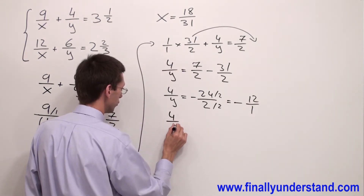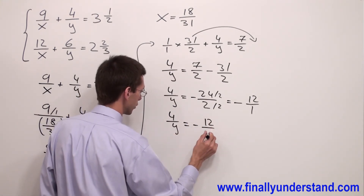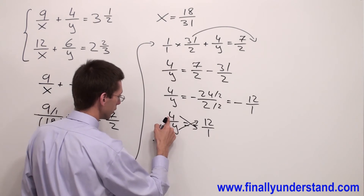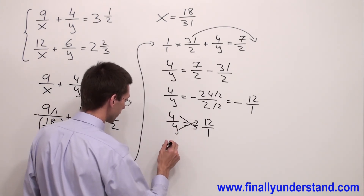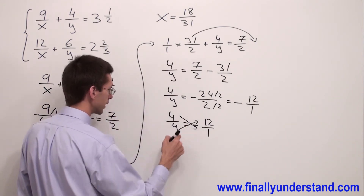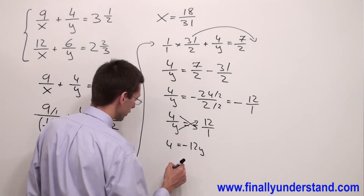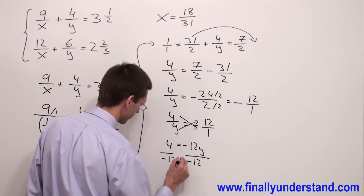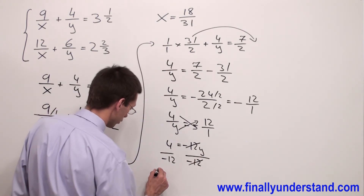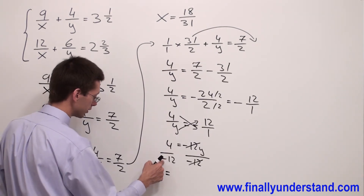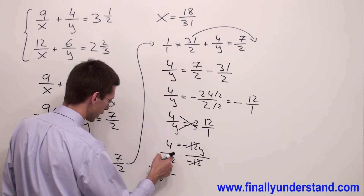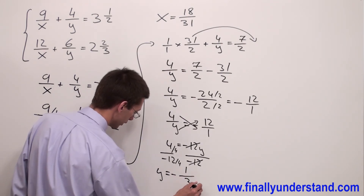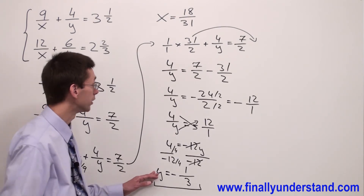So 4 over y equals negative 12 over 1. We solve the proportion: 4 times 1 equals 4, equals y times negative 12, so negative 12y. Dividing both sides by negative 12 — negative 12 cancels — we have y equals positive divided by negative, giving a negative result. Reducing 4 and 12 by 4 gives y equals negative 1 over 3.